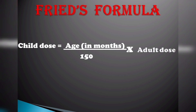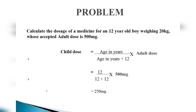Let's calculate a sum. Calculate the dosage for a 12-year-old boy weighing 20 kg whose accepted adult dose is 500 mg. We apply Young's formula: child dose equals age in years divided by (age in years plus 12), multiplied by adult dose. That gives us 12 divided by (12 plus 12), multiplied by 500. So 12 multiplied by 500 equals 6,000. Dividing 6,000 by 24 gives us 250 mg.